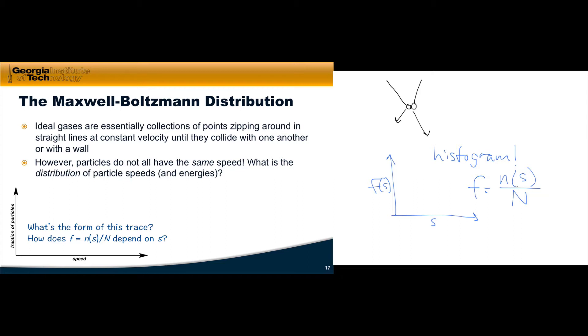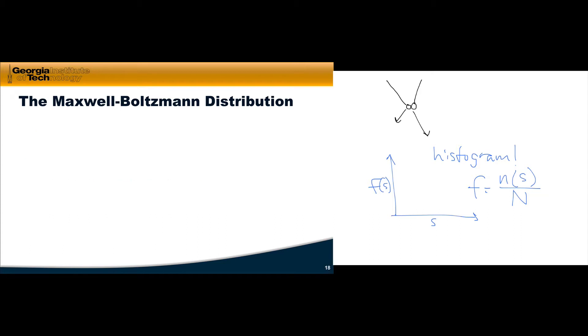To begin to get at this distribution, we can lay out some of the assumptions of the KMT in a slightly different form to think about conditions on the distribution. This was done by Maxwell back in the 19th century. He reasoned that since collisions dissipate no energy, the total kinetic energy is conserved. So that means there's one distribution with one total kinetic energy that characterizes the ideal gas.